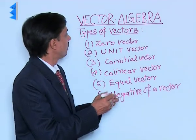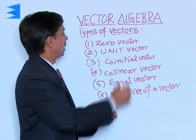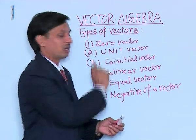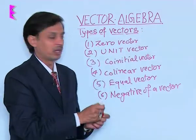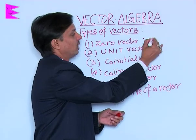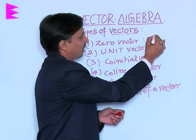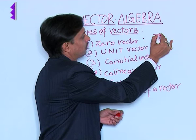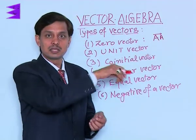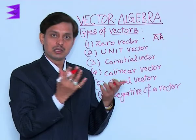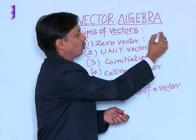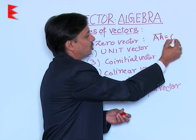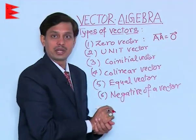If we talk about the types of vectors, the zero vector or null vector is one of them. If a vector starts with A and ends with A, then A minus A gives position zero. So we call it a zero or null vector.